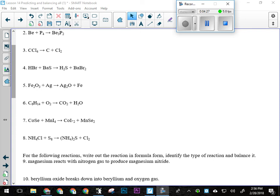All right. Let's just walk through two and three here. So on number two, I have beryllium reacting with phosphorus. And that is going to produce beryllium phosphide.